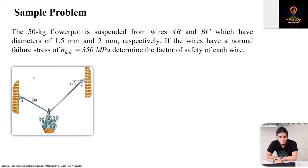If the wires have a normal failure stress of 350 megapascals, determine the factor of safety of each wire. They have the same failure stress of 350 MPa, so more or less these two wires are made of the same material since they have the same failure stress.